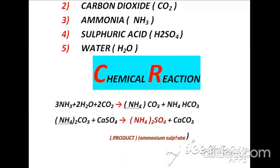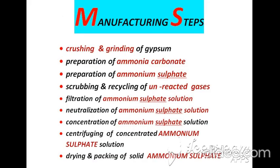According to chemical reactions, ammonia, water, and carbon dioxide react with each other to form ammonium carbonate. That ammonium carbonate in the next stage reacts with calcium sulphate, and we get our product ammonium sulphate.